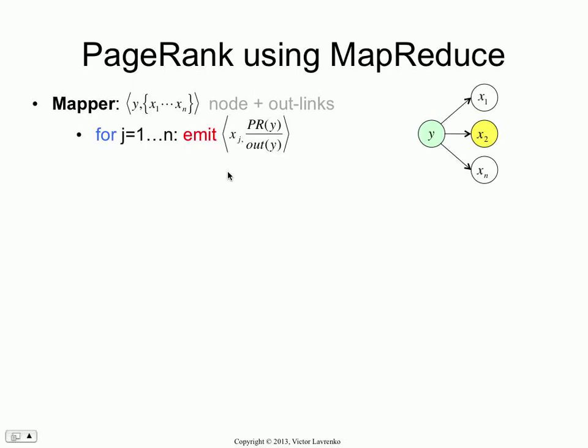The mapper is going to emit the initial PageRank. For each node that y connects to — y points to a bunch of nodes — for each node that it points to, I'm going to take my current PageRank of y. What is it? It's just one over big N, the number of nodes in the graph. My out-degree is little n, that's how many neighbors I point to. So for each one of those neighbors xj, I take my PageRank and divide it up equally by the number of neighbors, and emit that contribution to each one of my neighbors.